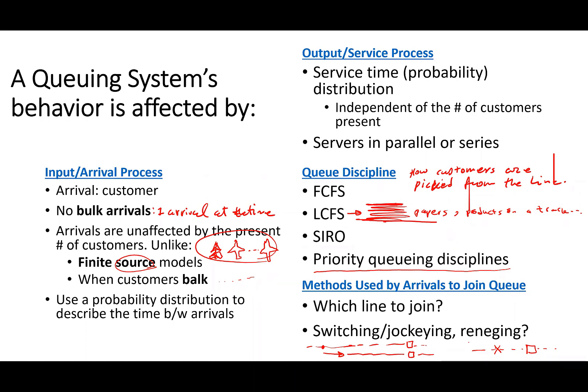These are the basic assumptions we have in queuing systems, and these are the things that affect the behavior of the system. Moving forward, we are going to characterize a queuing system by identifying the arrival process, the output process, the queuing discipline, the population, and whether the system has a capacity. Sometimes a system has a capacity — if you have more than 10 people in it, you cannot accept more and the doors close. First we characterize the system, then we use the formulas for each system to answer the questions we saw earlier.